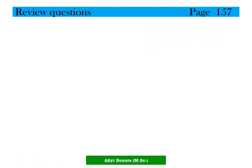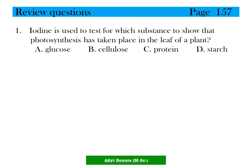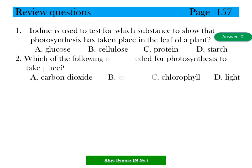Review questions, page 157. Question 1: Iodine is used to test for which substance to show that photosynthesis has taken place in the leaf of a plant? A. Glucose. B. Cellulose. C. Protein. D. Starch. The answer is D, starch. Question 2: Which of the following is not needed for photosynthesis? A. Carbon dioxide. B. Oxygen. C. Chlorophyll. D. Light. The answer is B, oxygen — because oxygen is a product of photosynthesis, not something needed for it.